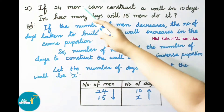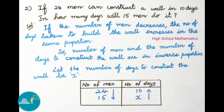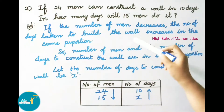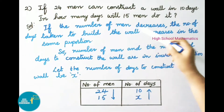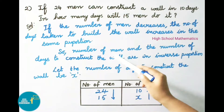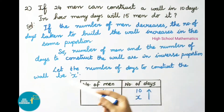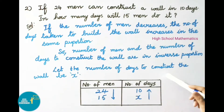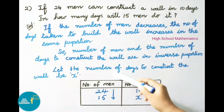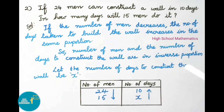Here the number of men decreased, so the number of days taken to construct the wall will be increasing. Since one quantity is decreasing and the other is increasing, number of men and the number of days to construct the wall are in inverse proportion. Let the number of days to construct the wall be x.